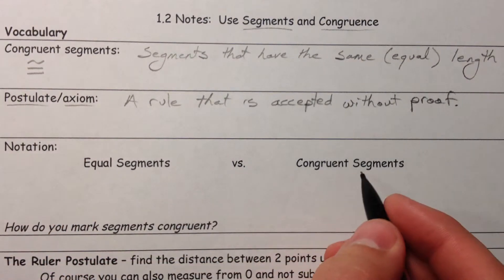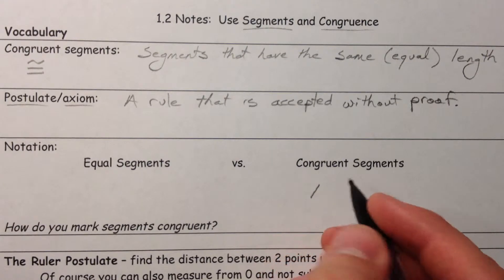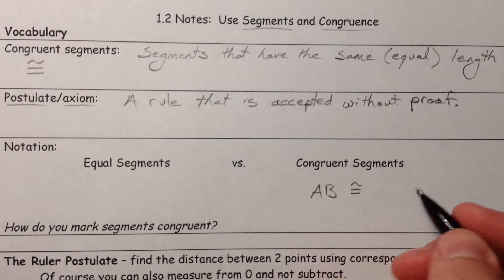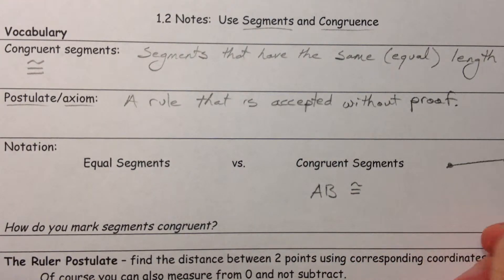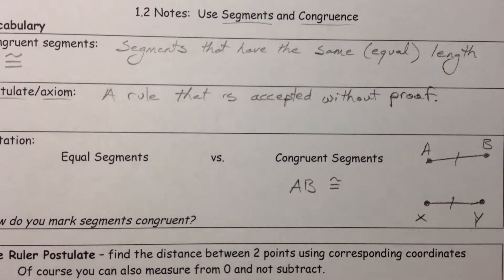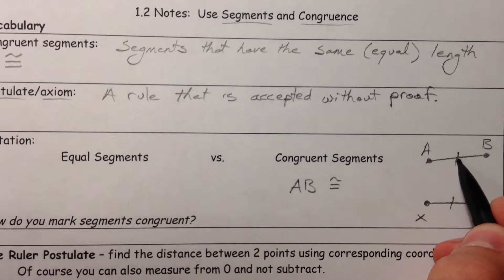Now, we've talked about segments that are congruent. Let's say we have this segment AB, and we have this segment XY. And let's say that they are the exact same length. First off, how do you mark them congruent? In geometry, we're going to use these little things called hashes, or if you prefer, hash-dashes. That second one was not a technical term, just so you know, but these hash marks.